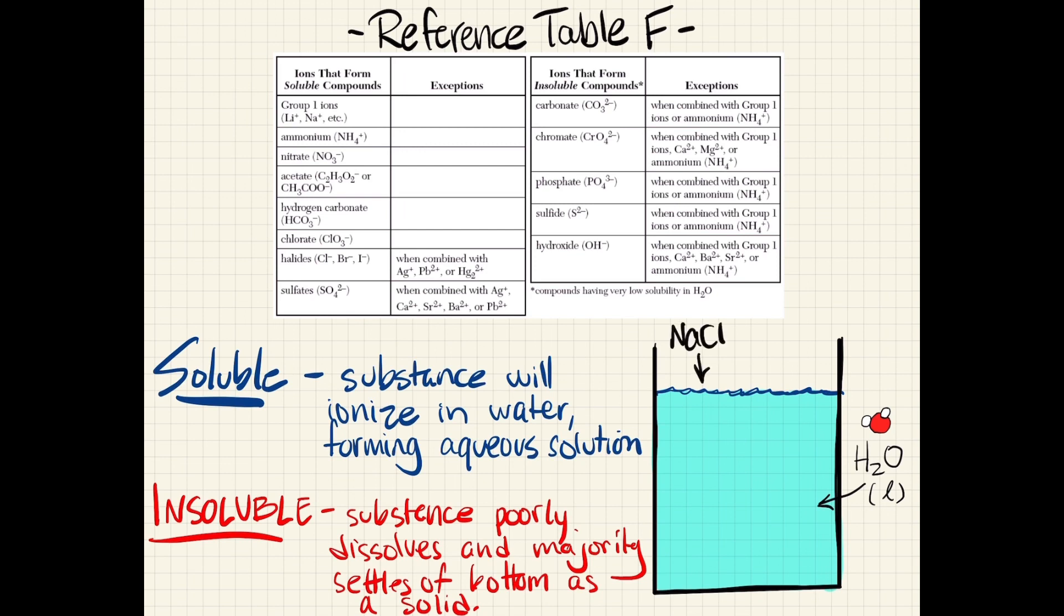Let's take, for example, sodium chloride. If we place sodium chloride, which contains a group 1 ion and a halide, the Cl minus ion, it will dissociate and dissolve completely into water.